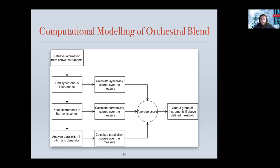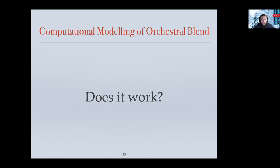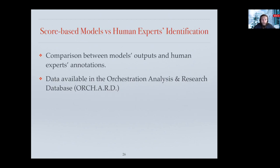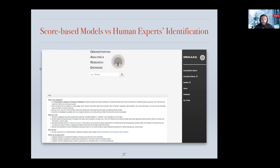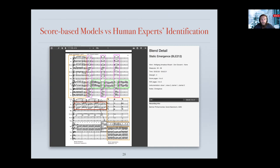Lowering the threshold allows for greater flexibility from these rules. So, does it work? We chose to compare the model output with human expert annotation. For that evaluation, we use data from the Orchestration Analysis and Research Database (OARD). This database contains several annotations of perceptual effects of orchestration made by musical experts who had access to scores and professional recordings of the orchestral pieces. Here we have an entry of an orchestral blend in Mozart's Don Giovanni, with information about where the effect appears and the instruments involved.